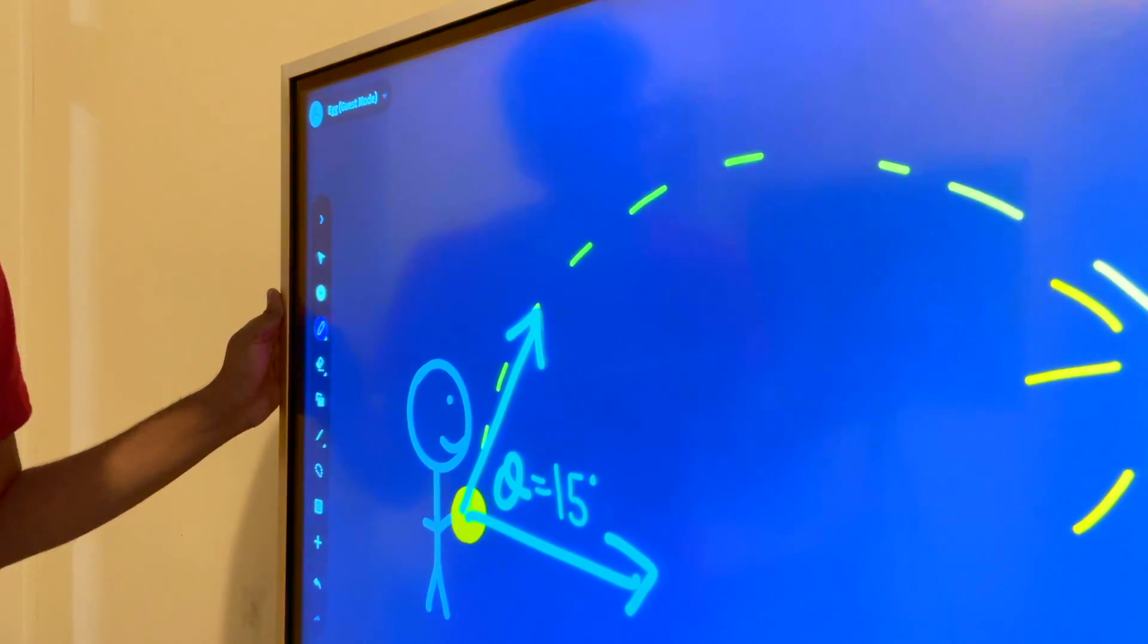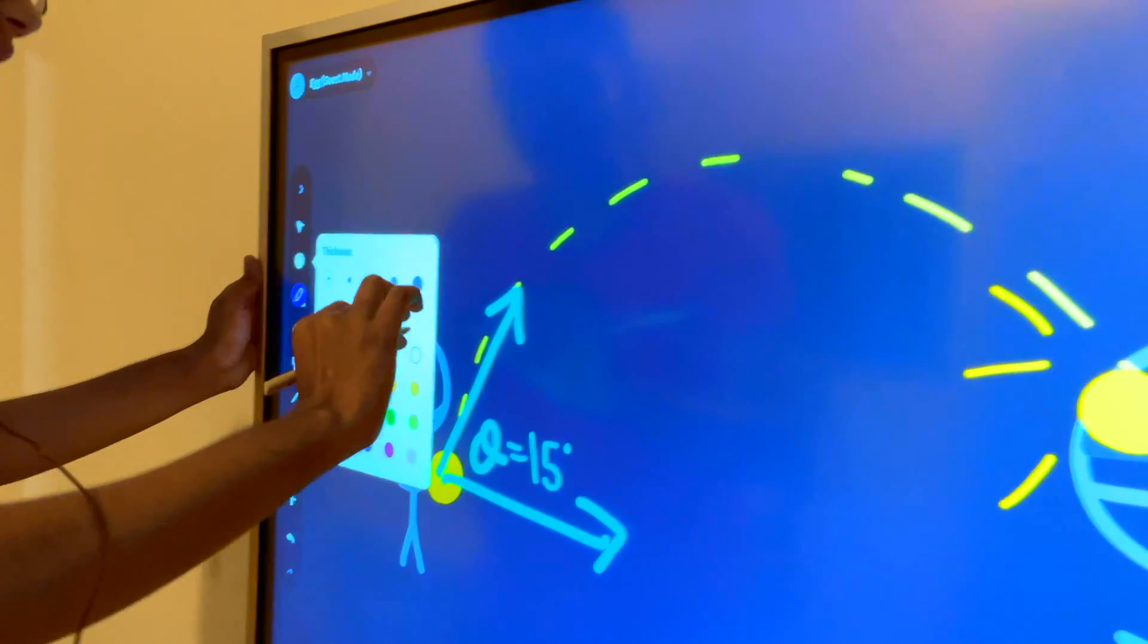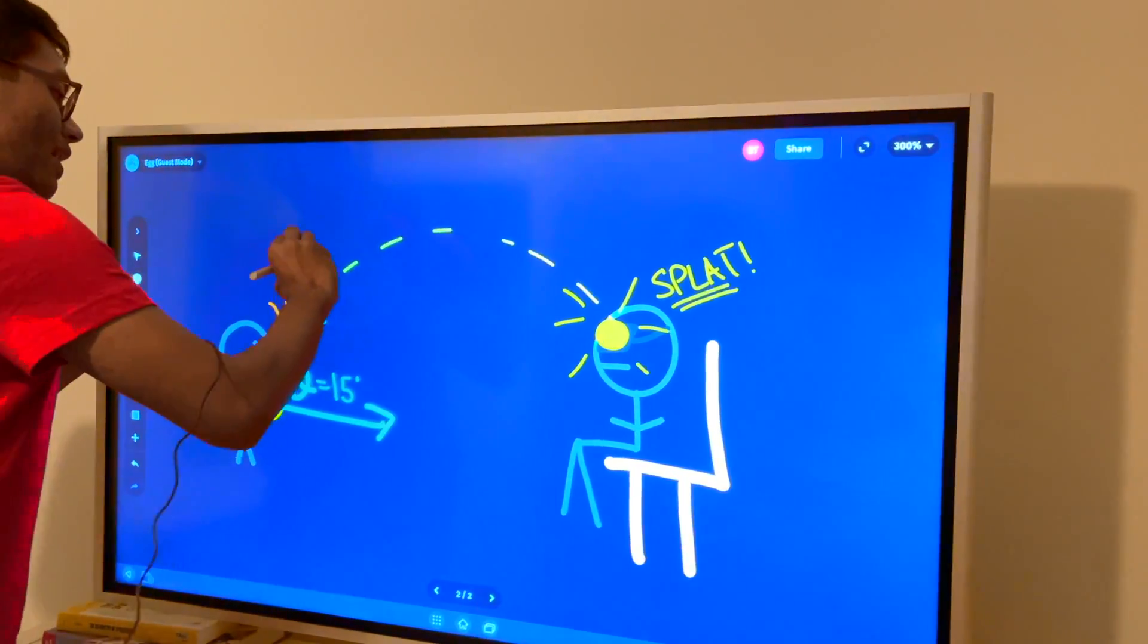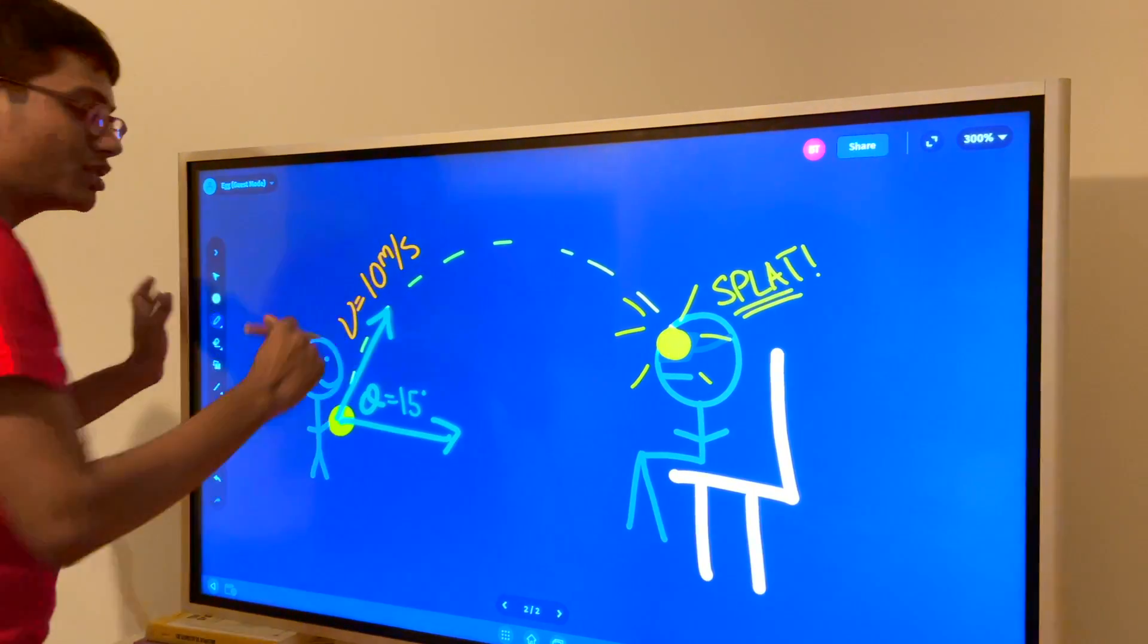We also know the initial velocity that the egg is launched. We can call that velocity v. That velocity is going to be 10 meters per second. Now how do we find the horizontal range that this egg carries?